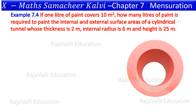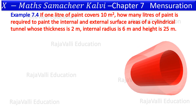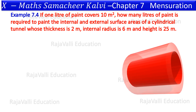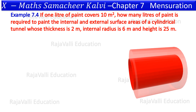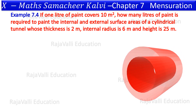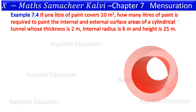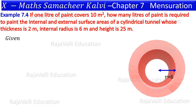In the tunnel, a 3-dimensional view gives a clear idea. We will mark these dimensions in this space. Internal radius is 6 meters, thickness is 2 meters, external radius is 8 meters, and height is 25 meters.